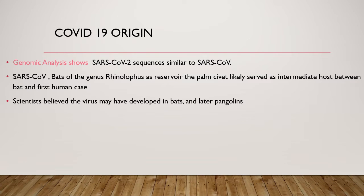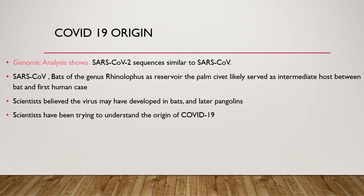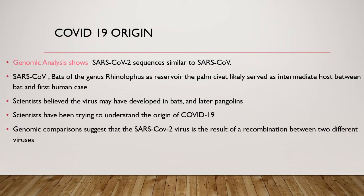Regarding COVID-19 specifically, scientists originally believed the virus may have developed in bats and later transferred to pangolins, but many studies did not conclude this theory. Scientists are still trying to understand the origin of COVID-19. However, genomic comparison suggests that the COVID-19 virus is the result of a recombination between two different viruses.